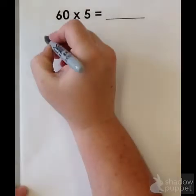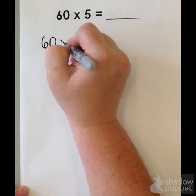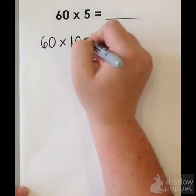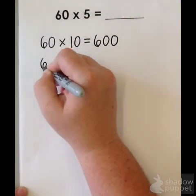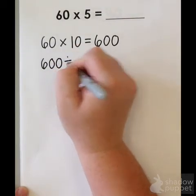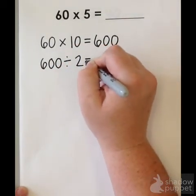First, I multiply 60 times 10, and that equals 600. Then, I divide 600 in half, and that equals 300.